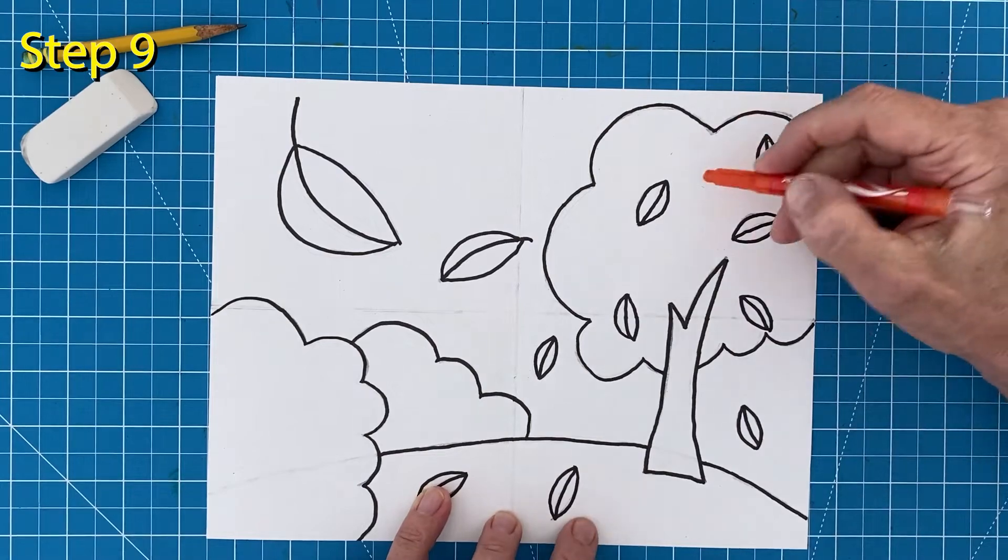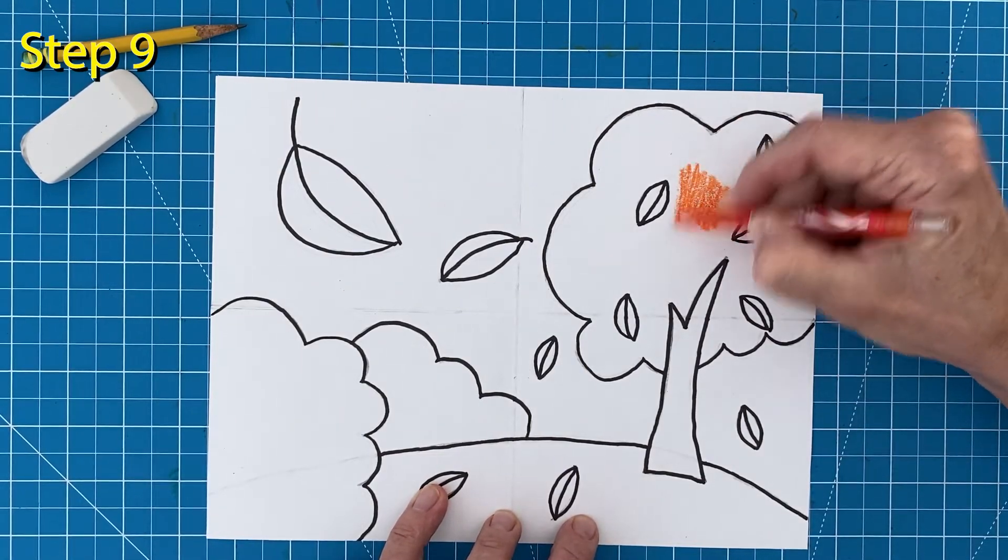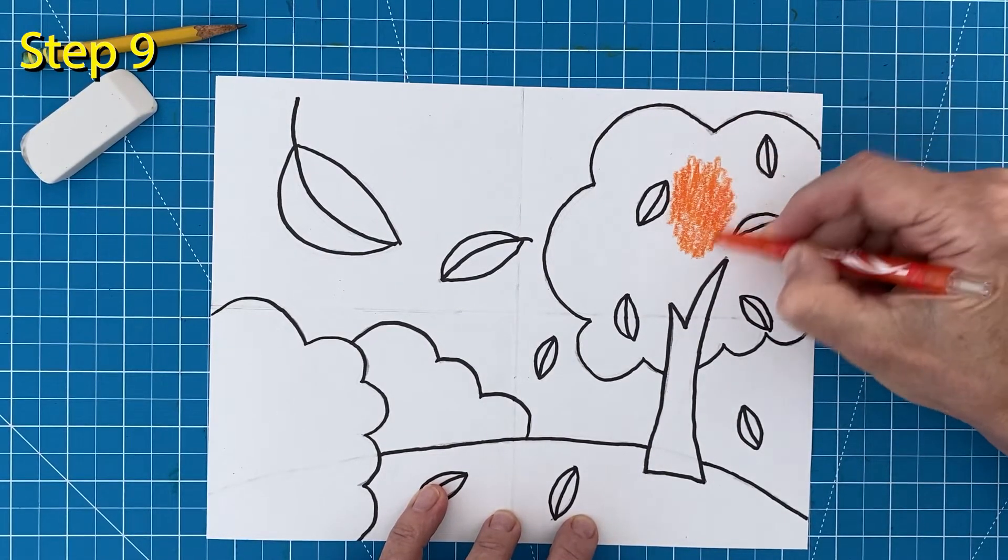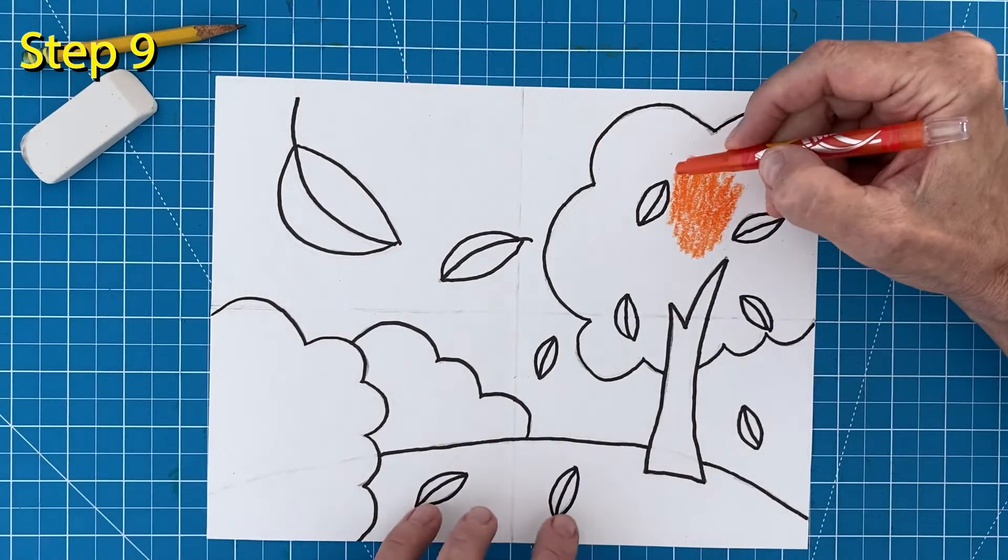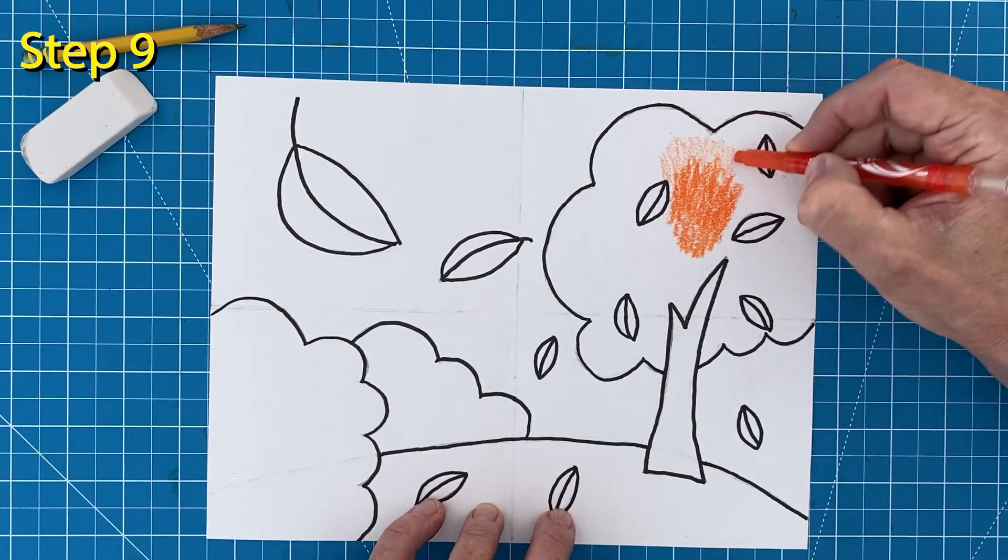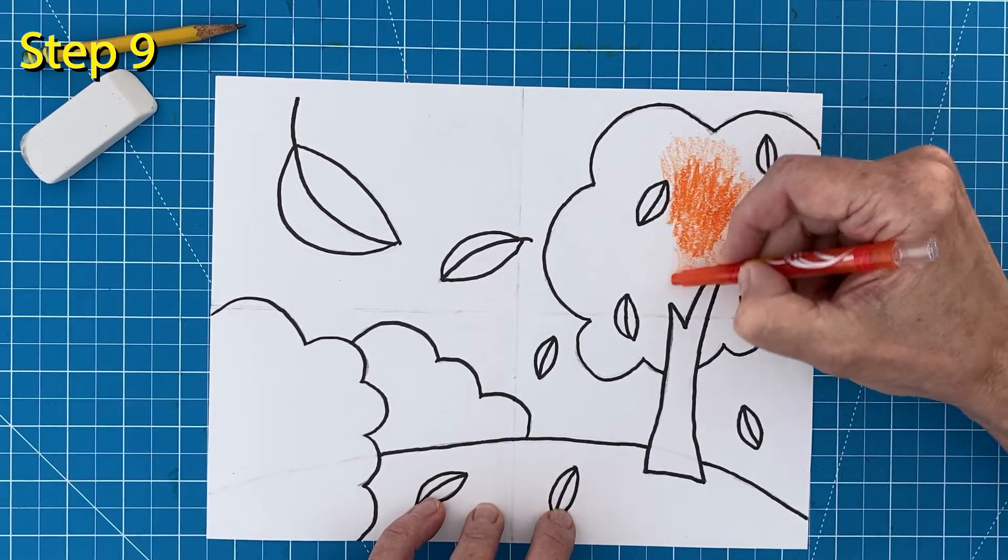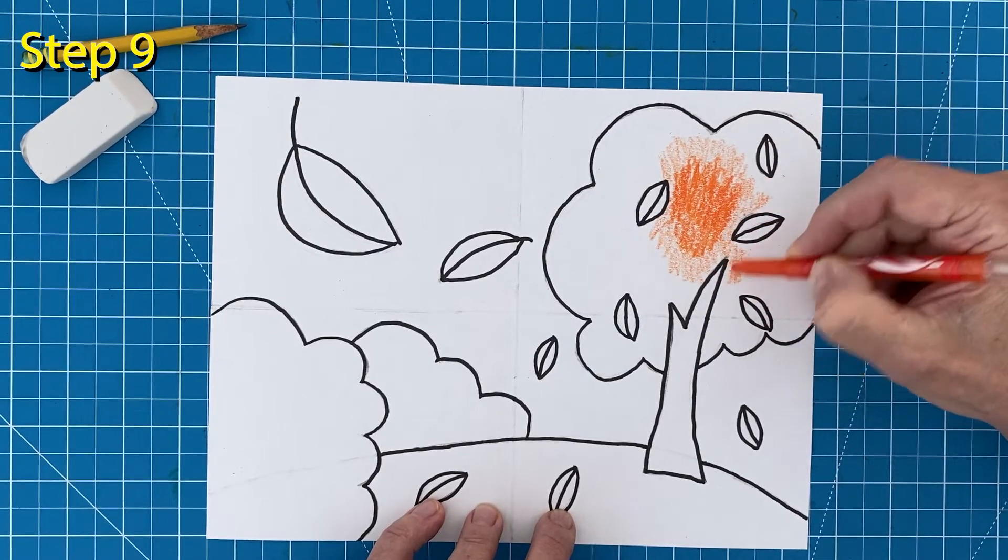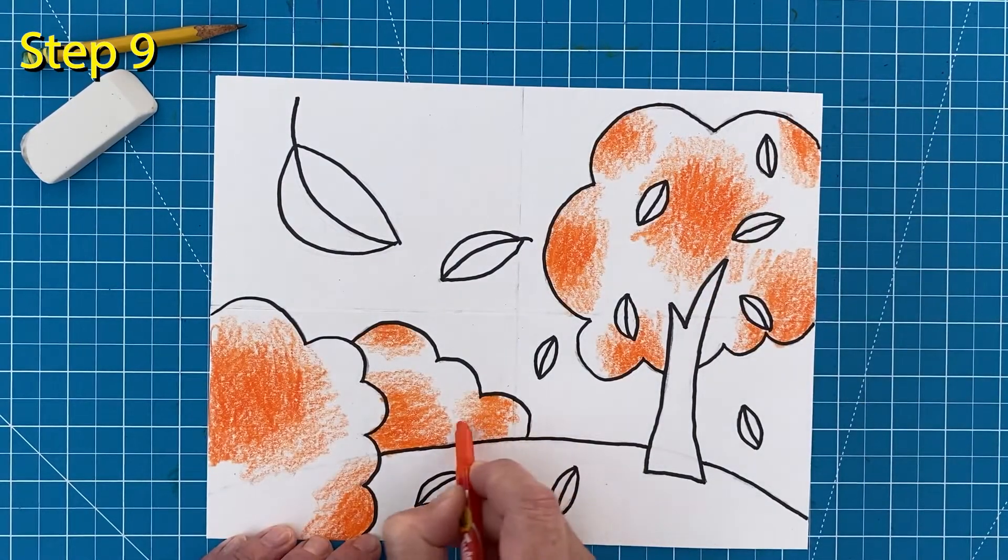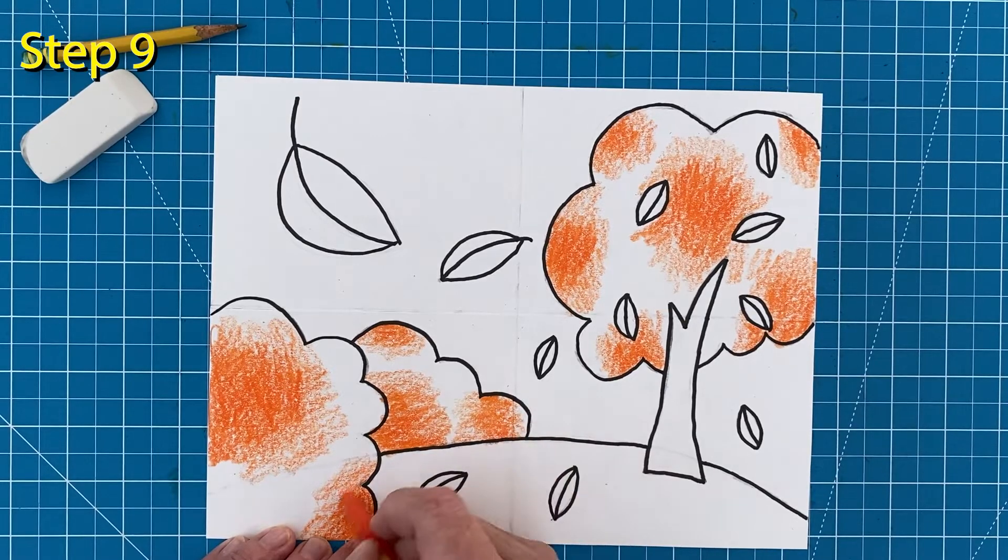And now for some fall coloring. Start with making dark patches of orange on the tree. Afterwards, color around the edges to make them a little bit lighter. Next, make a lot more patches like this all over the tree and bushes.